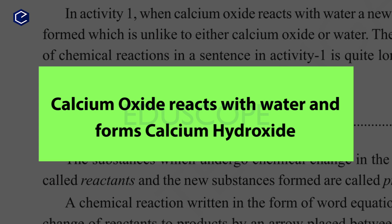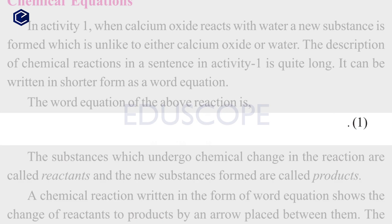Here's a chemical reaction: calcium oxide reacts with water and forms calcium hydroxide. This reaction can be represented in equation form as calcium oxide plus water gives rise to calcium hydroxide. This is how we represent the equation in equation form.